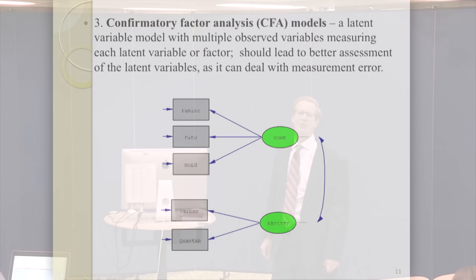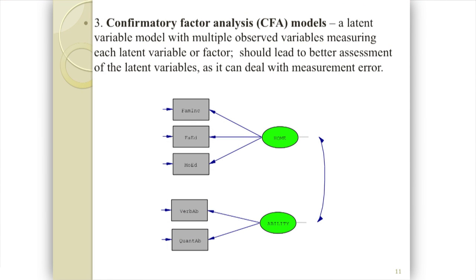Now we introduce latent variables. Confirmatory factor analysis models are often used when we're trying to determine the structure of some instrument. Here we have two latent variables — home background and ability — denoted by circles or ellipses, with two and three observed measures of each respectively. We're now taking measurement error into account by using multiple measures of each construct, which gives a better assessment than a single measure like family income.